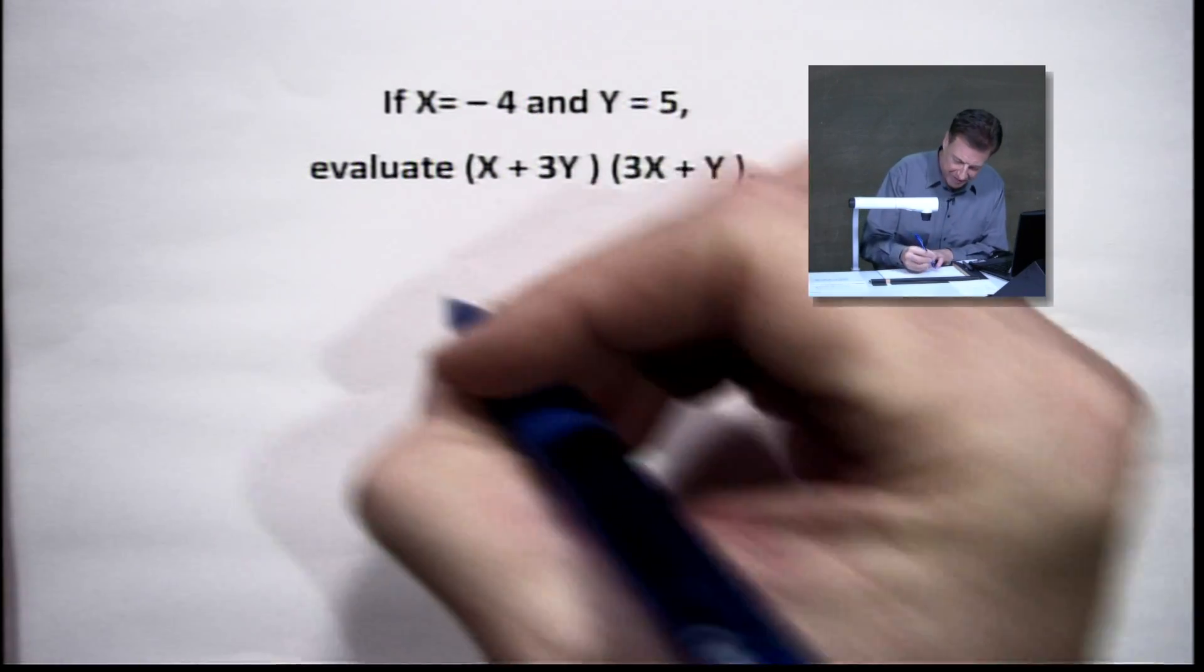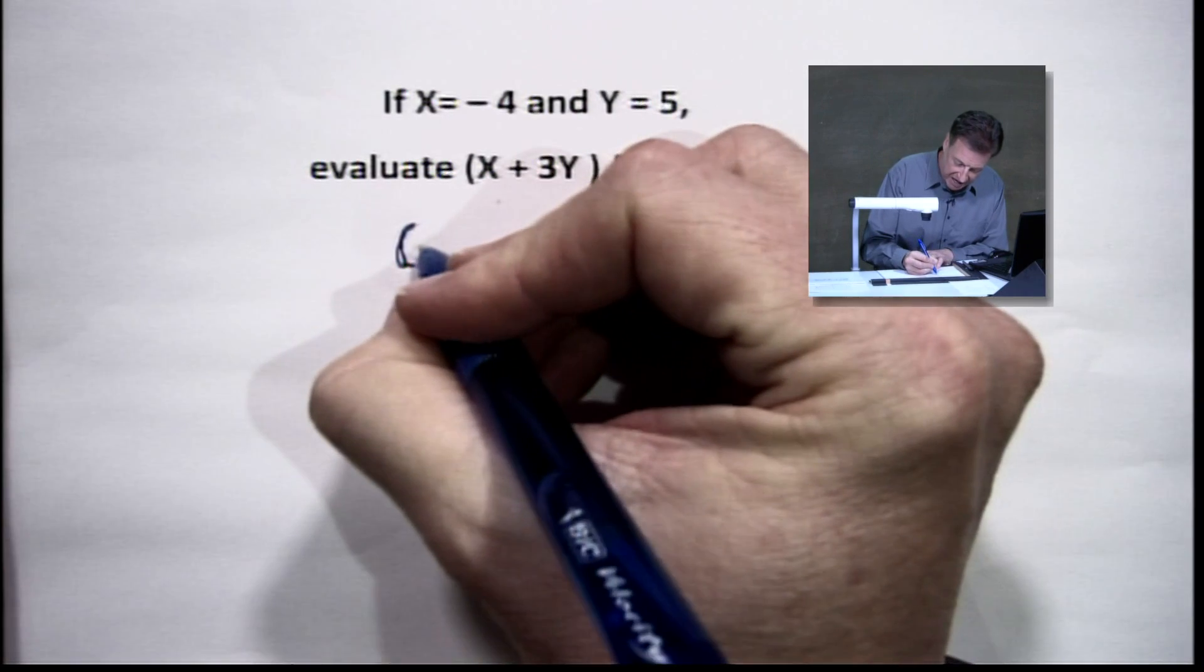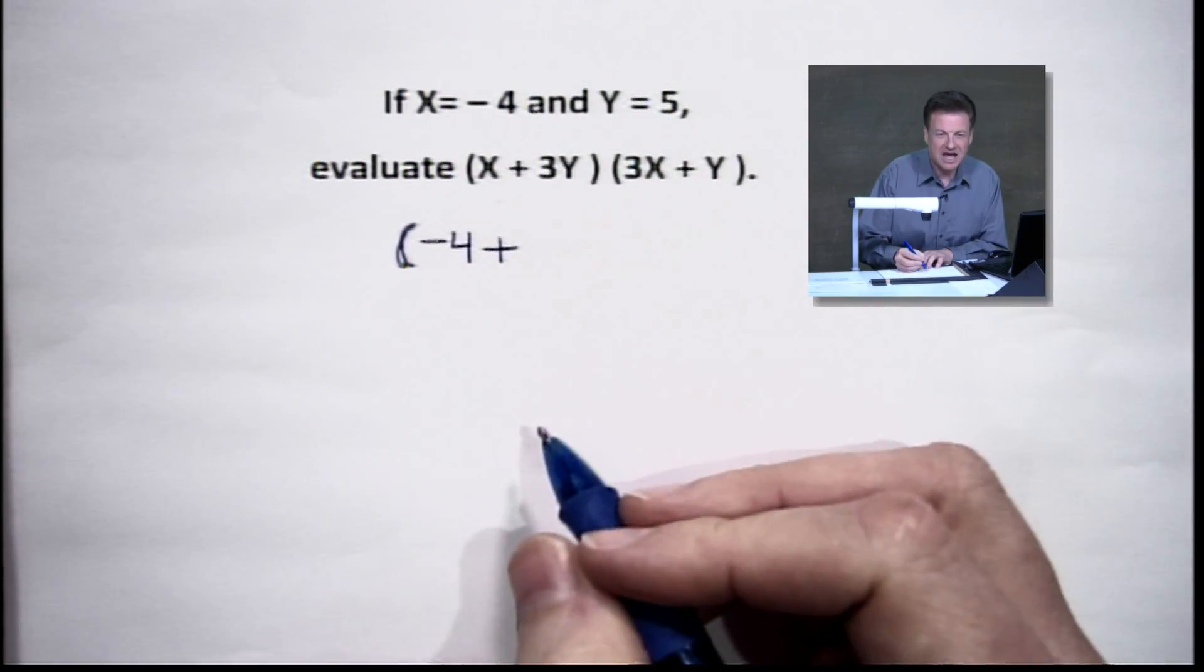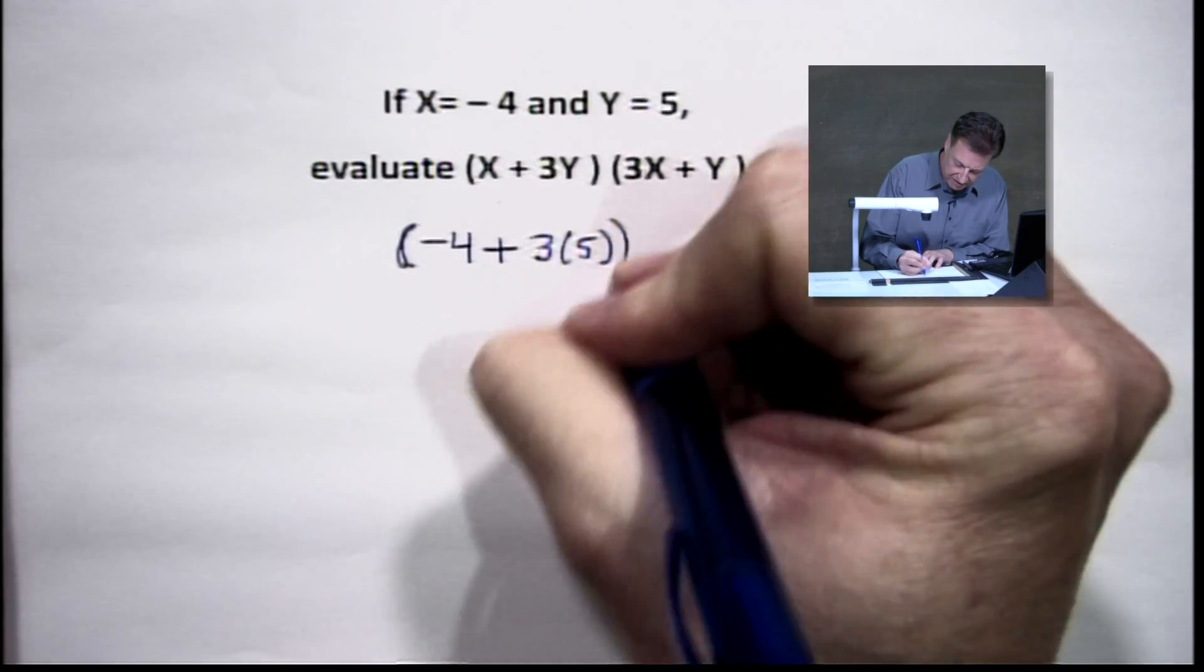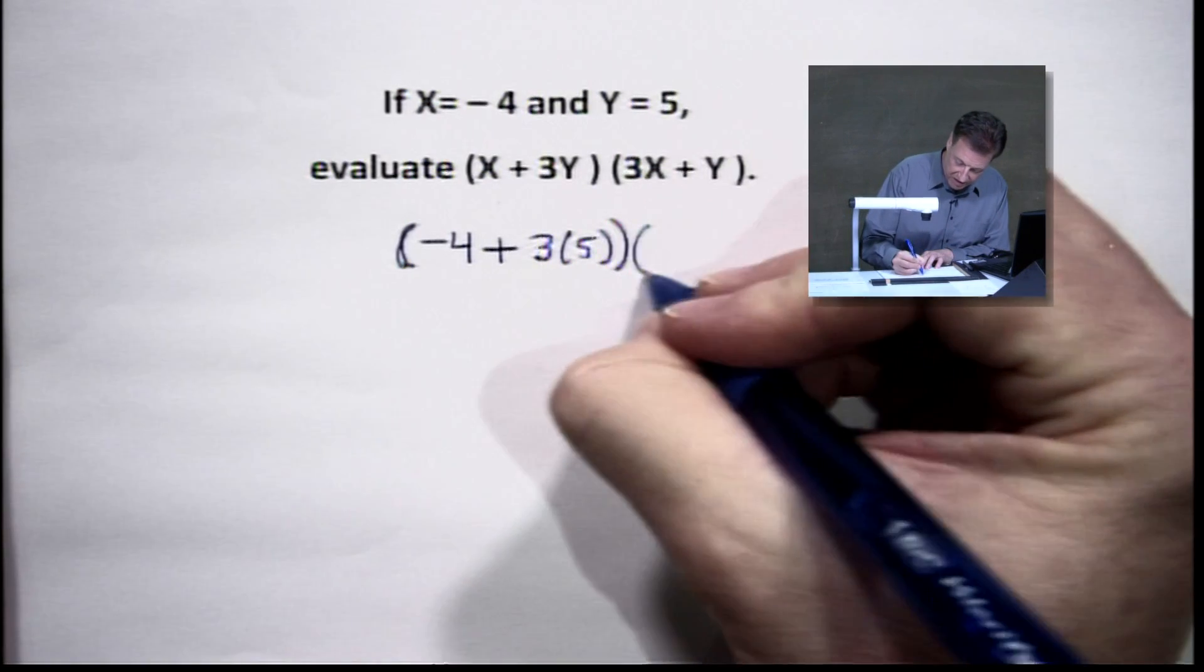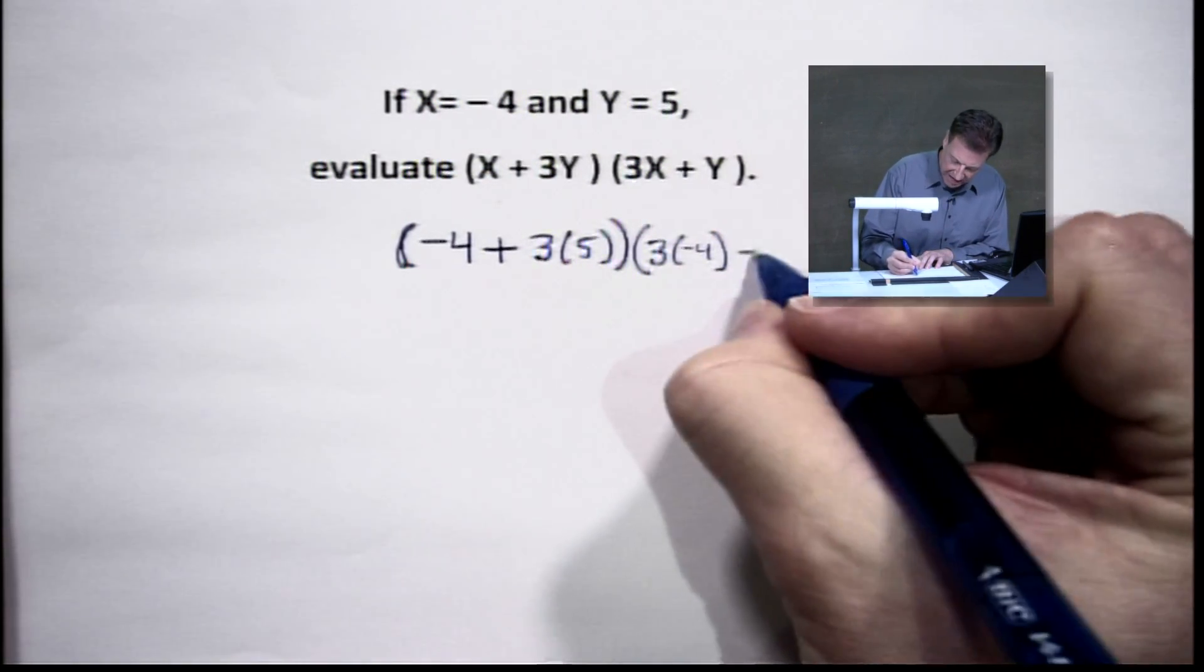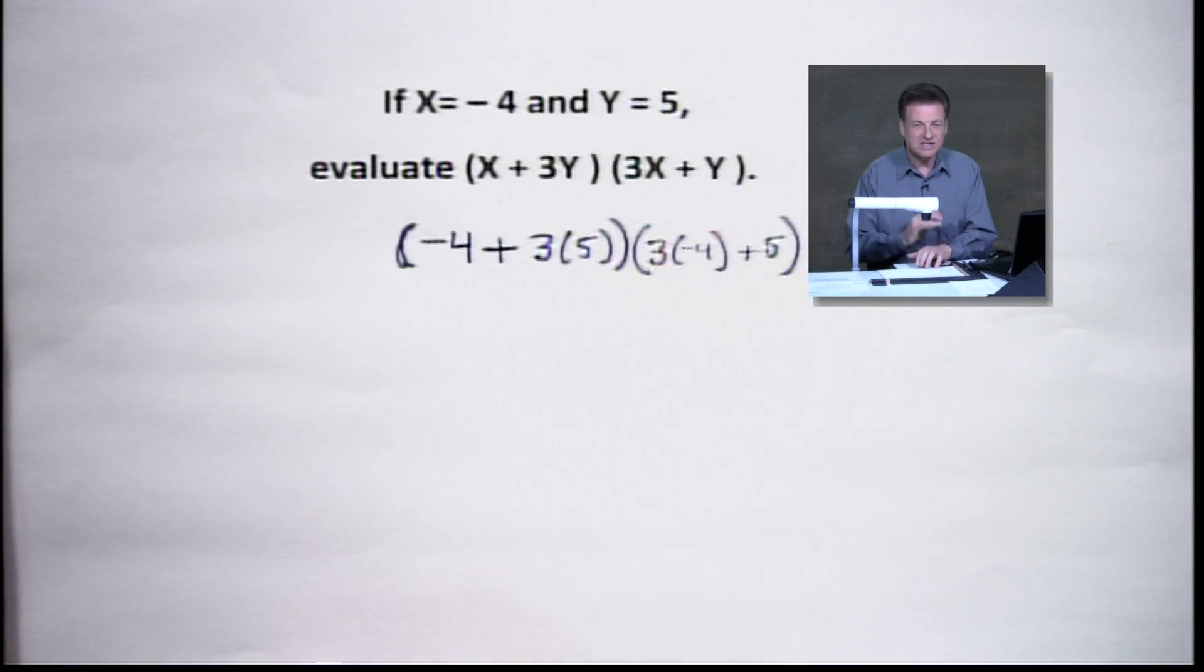So let's put some numbers on this page. Everybody's got it written down, I hope, at home. And we've got, here we go, going to bring it out here. We've got a negative 4 plus 3 times 5. Close that off. And then over here, we've got 3 times our negative 4, and we're going to add the 5. So once again, these numbers begin to make sense once we put these variables to rest and put numbers in their place.